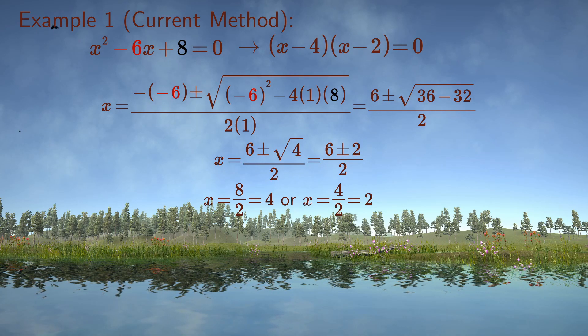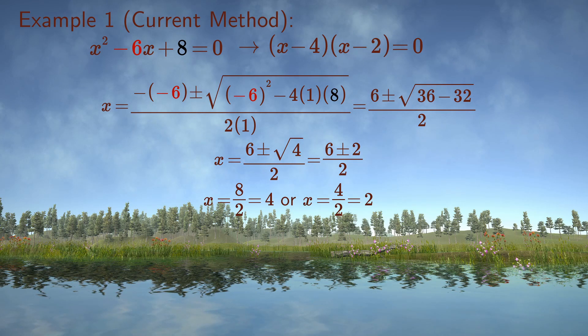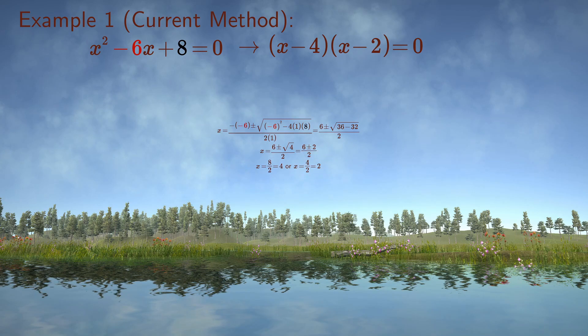We can confirm that 4 times 2 equals 8, and 4 plus 2 equals 6, which becomes minus 6 since the signs in the brackets are negative.